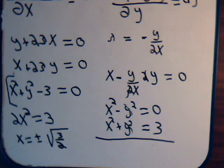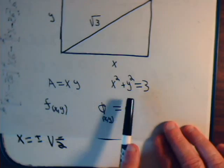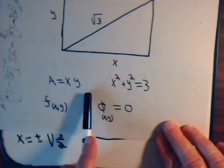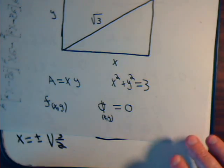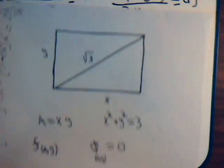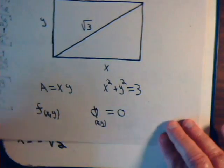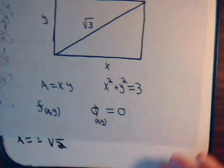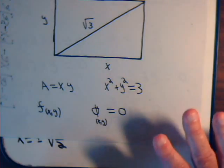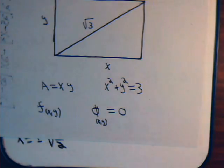You might be thinking it was a lot easier to just solve the constraint for y, substitute it into the area function, and take the derivative. And you're right — that is easier for this simple problem. We just wanted to use a simple example to demonstrate the technique of Lagrange multipliers. Because in more complicated problems, trying to substitute and reduce to one variable can make the algebra horrendously complicated, whereas the Lagrange multiplier approach provides a much more elegant and easier way to solve the problem.